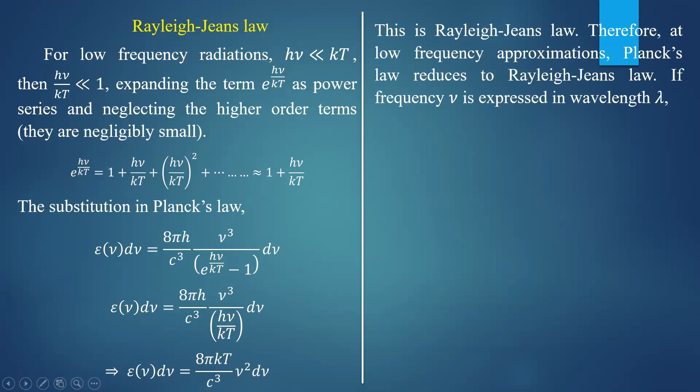This particular law is called Rayleigh-Jeans law. At a low frequency approximation, Planck's law reduces to Rayleigh-Jeans law. Rayleigh-Jeans law says that in the low frequency radiation region, the energy density is directly proportional to the square of the frequency of radiation.